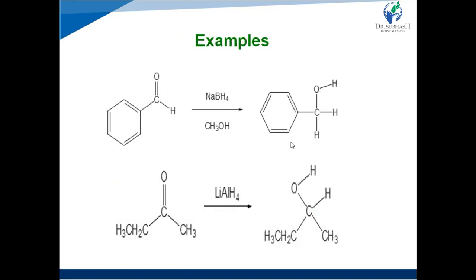The first example is benzaldehyde. Benzaldehyde undergoes reduction with the help of sodium borohydride in methanol to form the corresponding primary alcohol — benzyl alcohol — containing a CH₂OH group. The second example is a ketone, 2-butanone, which undergoes reduction with the help of lithium aluminum hydride to give the secondary alcohol, 2-butanol (2-hydroxybutane).